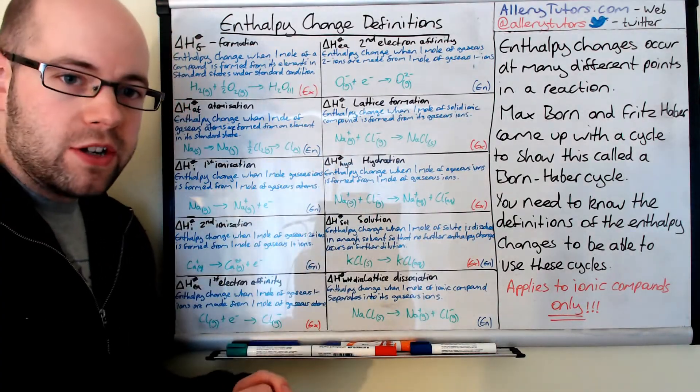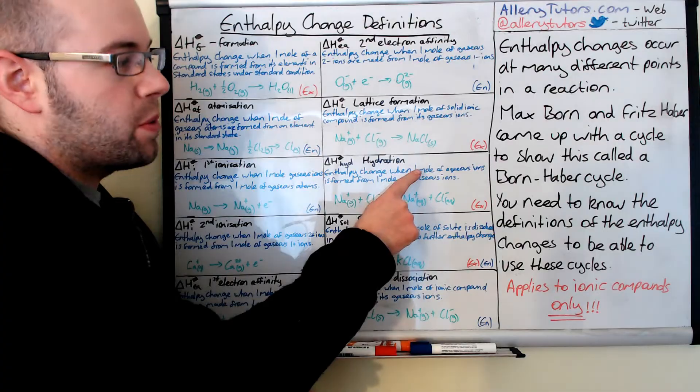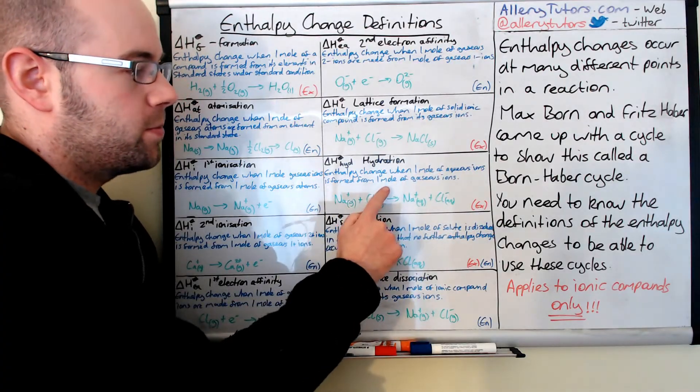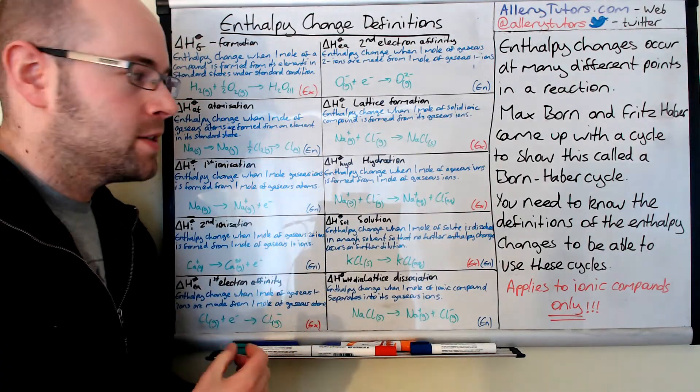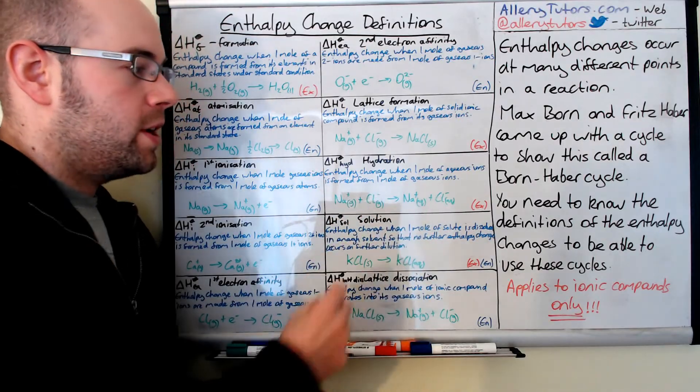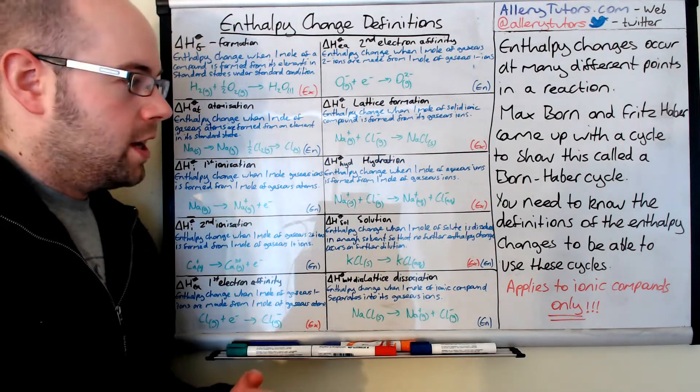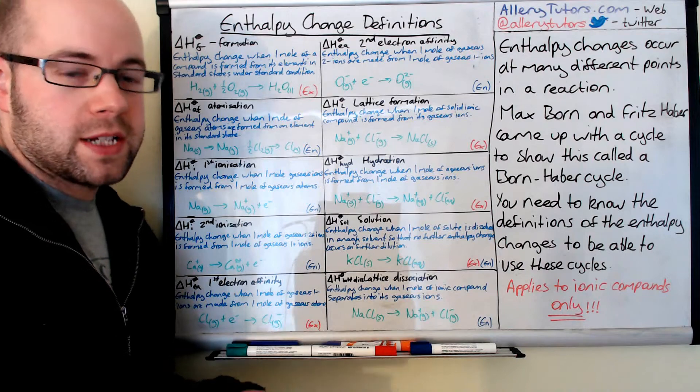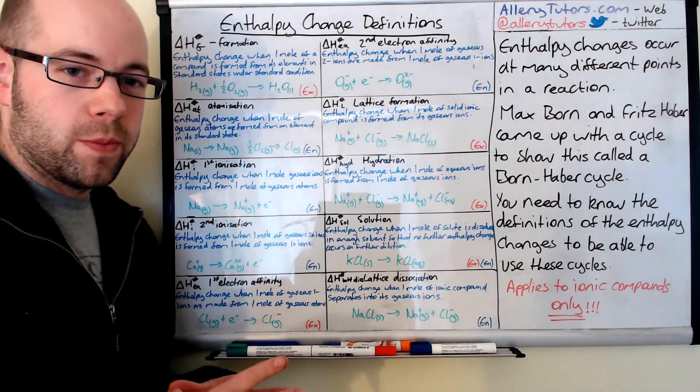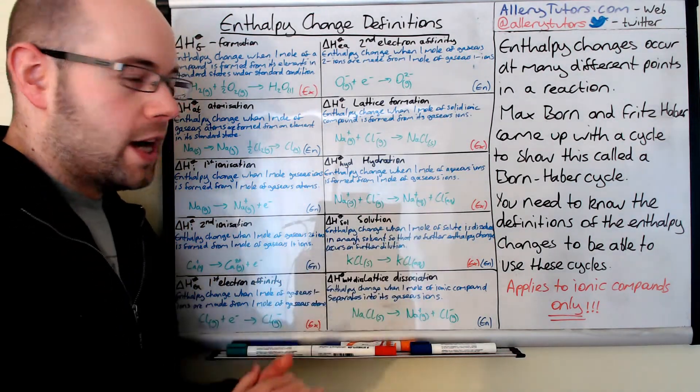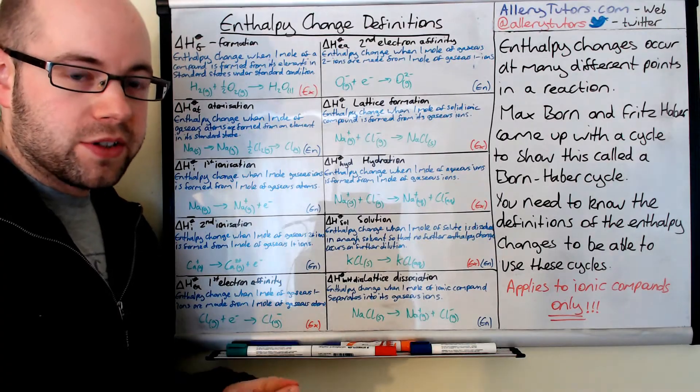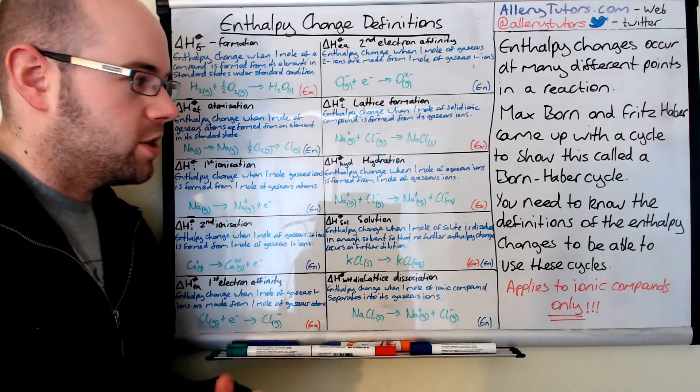Enthalpy of hydration is the enthalpy change when one mole of aqueous ions is formed from one mole of gaseous ions. Here's our gaseous ions, and we're forming aqueous ions. This is an exothermic process because water is effectively forming interactions with your ions. We class that as bond forming, so it's an exothermic process.